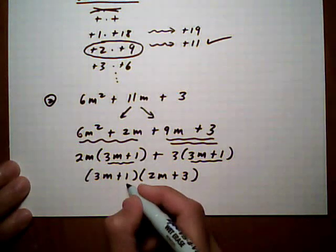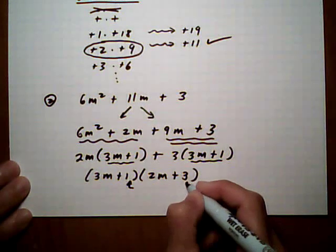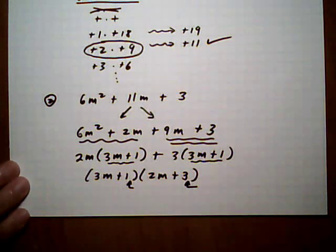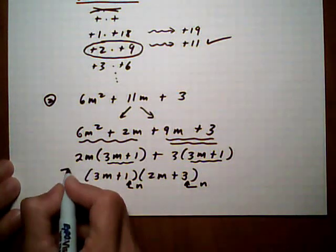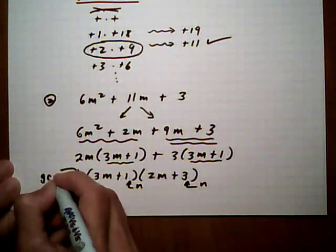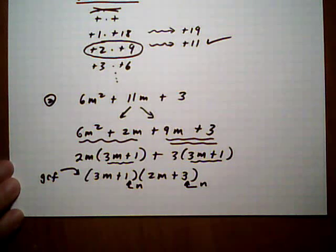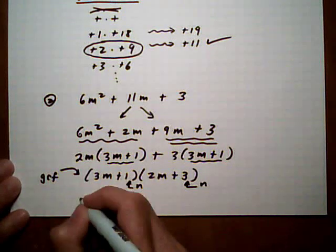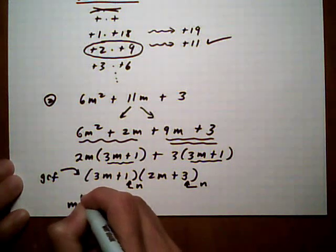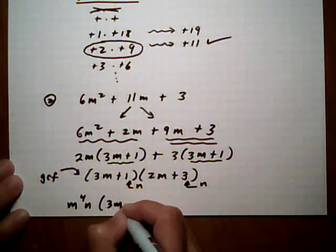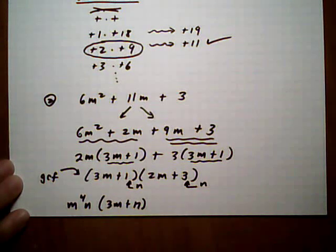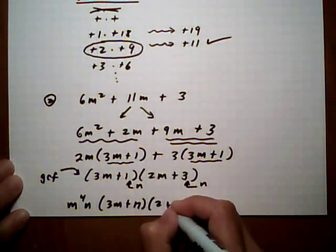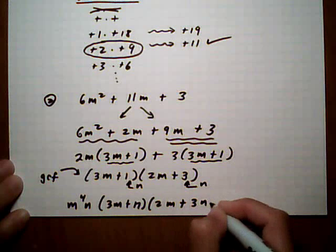And now I just need to remember, I need to insert the n here and here, and it will give me the right pattern. And I also need to reinsert the GCF from the beginning because I don't want to forget about that. That's part of my answer. GCF was m to the fourth n. 3m plus 1. Oops. Plus n. I almost forgot to put that n in there. Times 2m plus 3n. And that would be the final factoring.